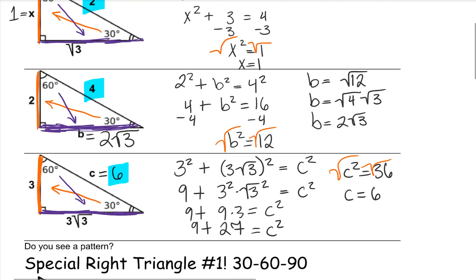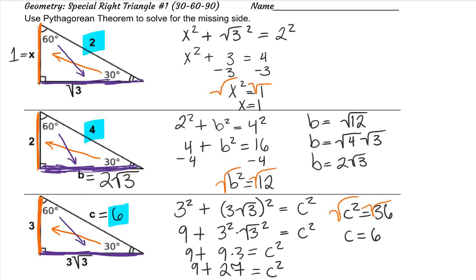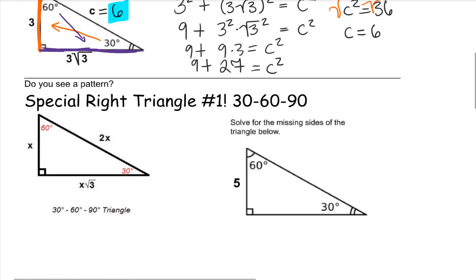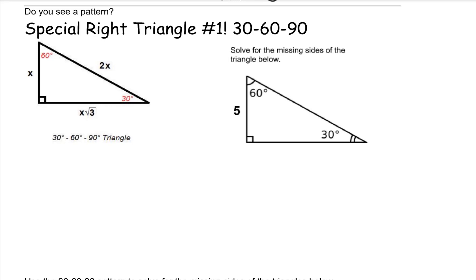You know how we had to have two sides of a right triangle in order to solve for the third side? If you know the angles inside of your triangle are 30 degrees, 60 degrees, and 90 degrees, then you only need one side. You don't actually need two sides because you don't have to use the Pythagorean theorem. What we're going to use is this pattern. The side that is across from the 30 degree angle, we're going to call that x. Every other side will be in terms of x. I like to call this the short side.